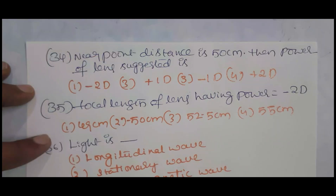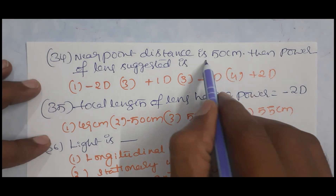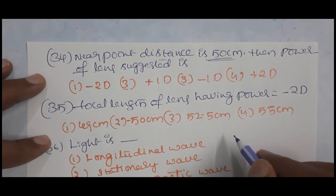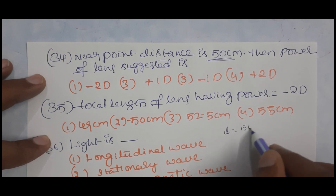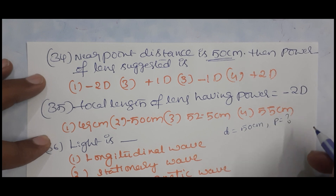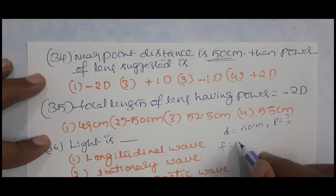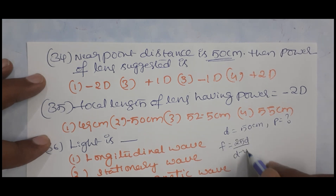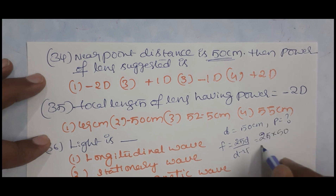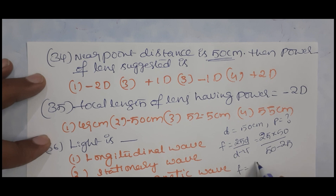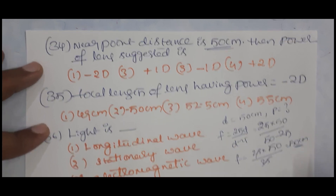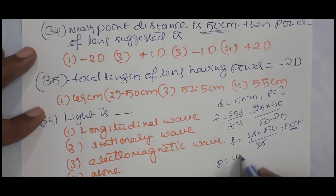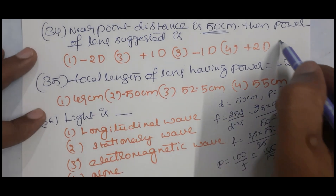If the near point distance D is 50 cm, the focal length is given by f = 25D/(D − 25) = (25 × 50)/(50 − 25) = 50 cm. Power of the lens P = 100/f = 100/50 = +2 diopters.